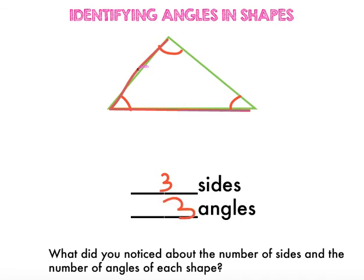So who can tell me, what did you notice about the number of sides and the number of angles of each shape? A pat on your back. Exactly. It's the same. The number of sides gives you the same number of angles. Great job.